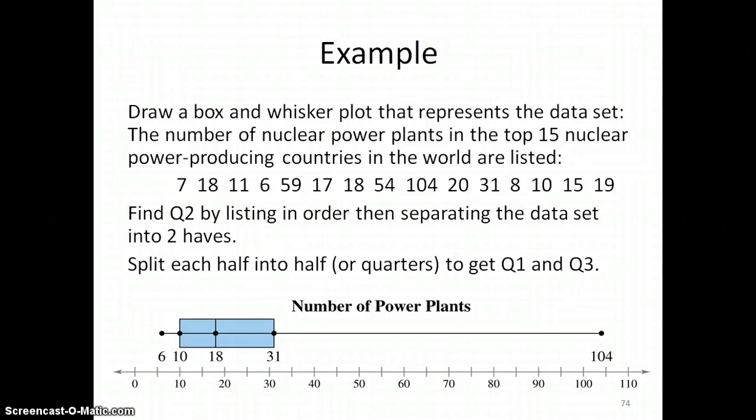We do that by separating it in half. First, we're going to need to insert or get the data in order. But conveniently, they've already done that somewhat for us. Once you've listed in order, you would then find the median the way you normally do, by counting towards the middle.